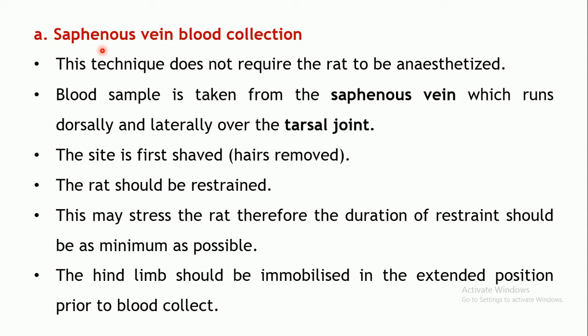The first method is saphenous vein blood collection. Anesthesia is not necessarily required here. Blood is collected from the saphenous vein, which runs dorsally and laterally over the tarsal joint — that is, the hind limb of the animal. The area must first be shaved so the vein is exposed, and the rat must be restrained so it does not move during collection.